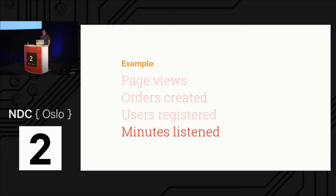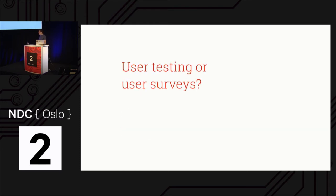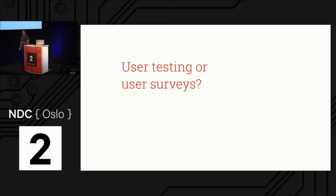There are other ways to get user data, like user testing or user surveys. User testing is when you take users, put them in front of a computer, film them, ask questions, and make them solve problems. These tools can be great for certain things, but not for A/B test-driven development. We are biased when we make decisions, and if you ask users a lot of questions, they are biased too. They will lie to you even though they don't think they're lying.